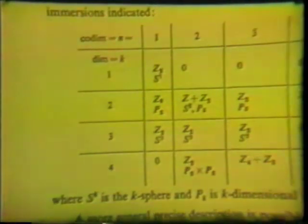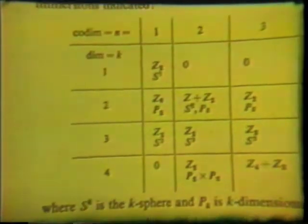Here's a page from the topology article based on his thesis. You can see that for manifolds of dimension two in codimension one, that is in R³, the group is Z8 generated by an immersion of P².